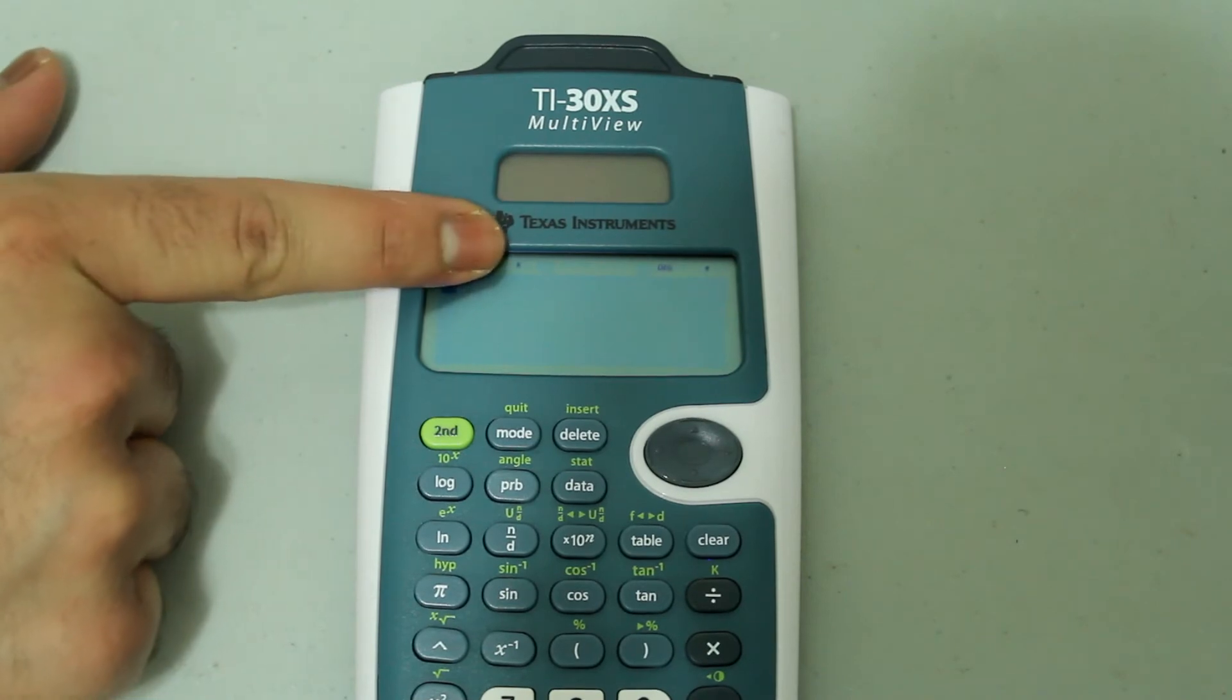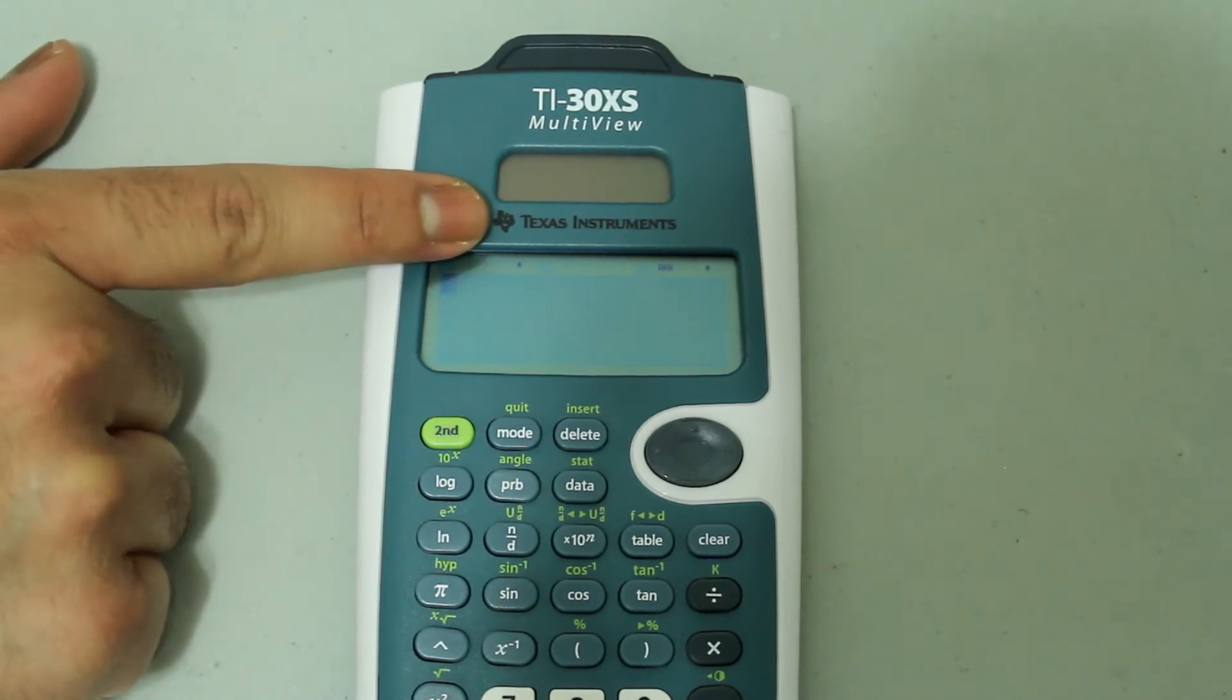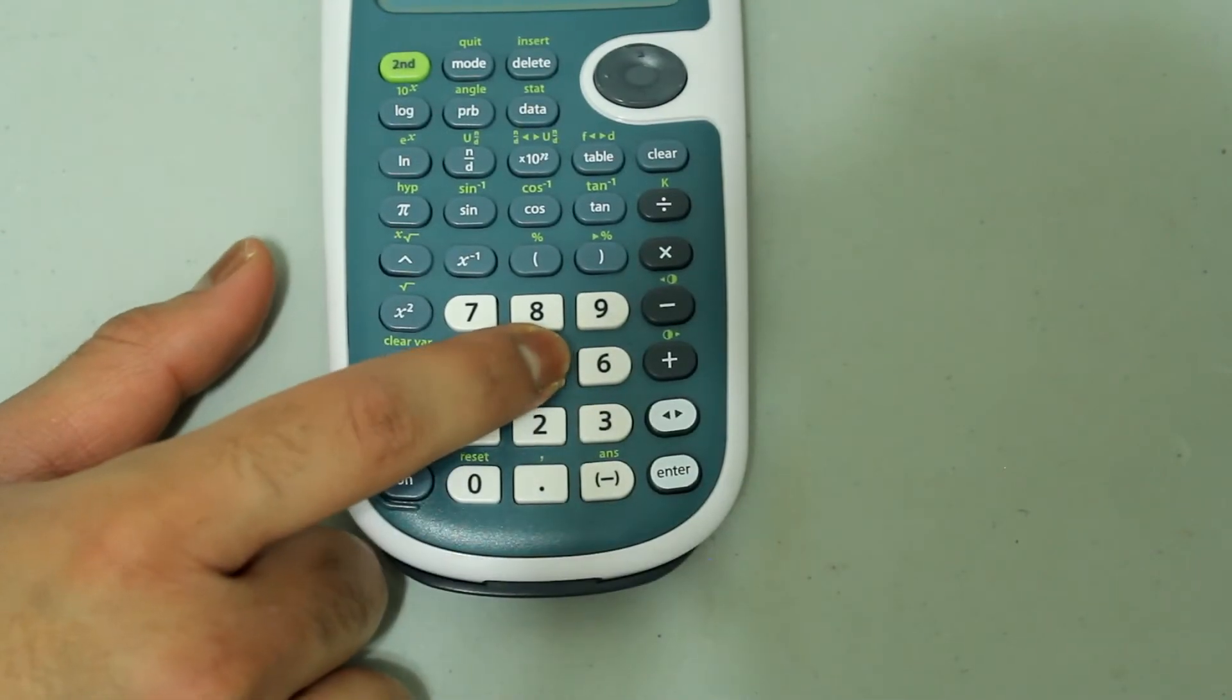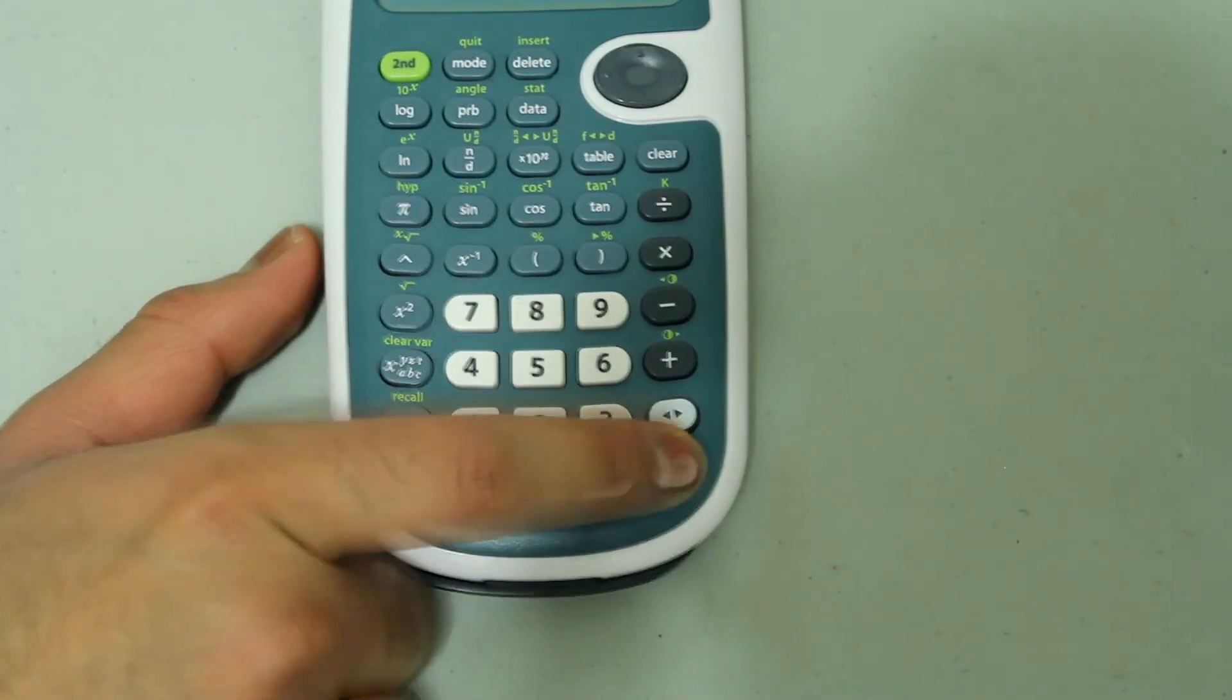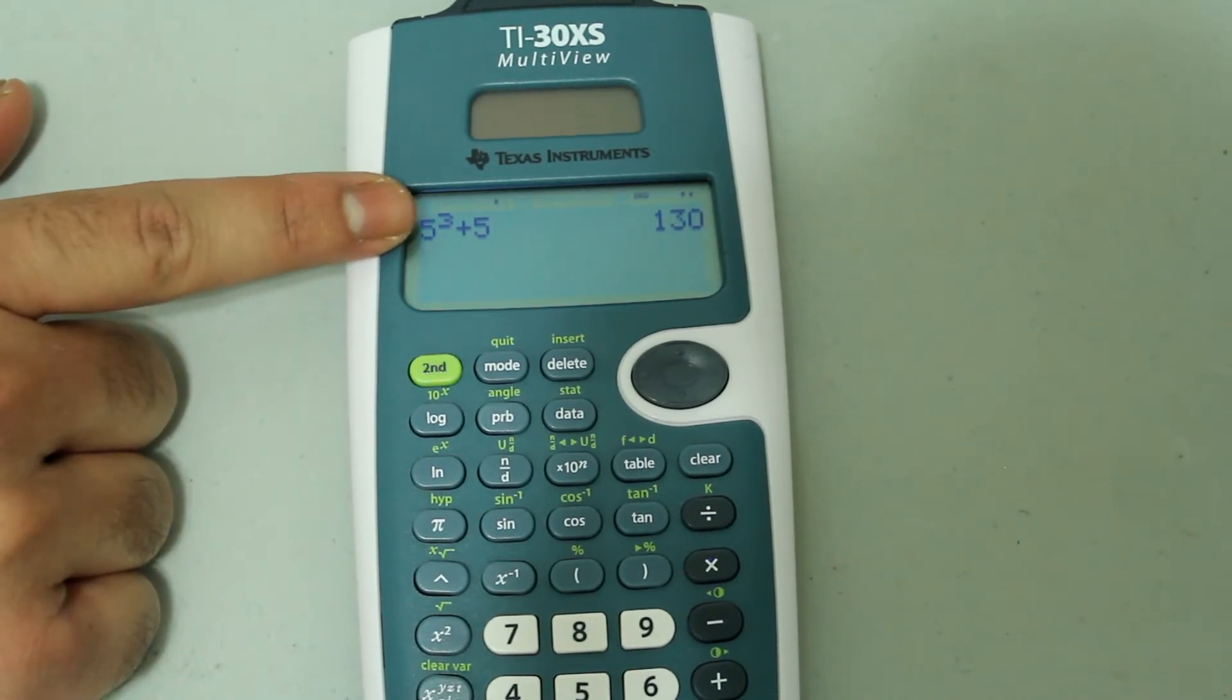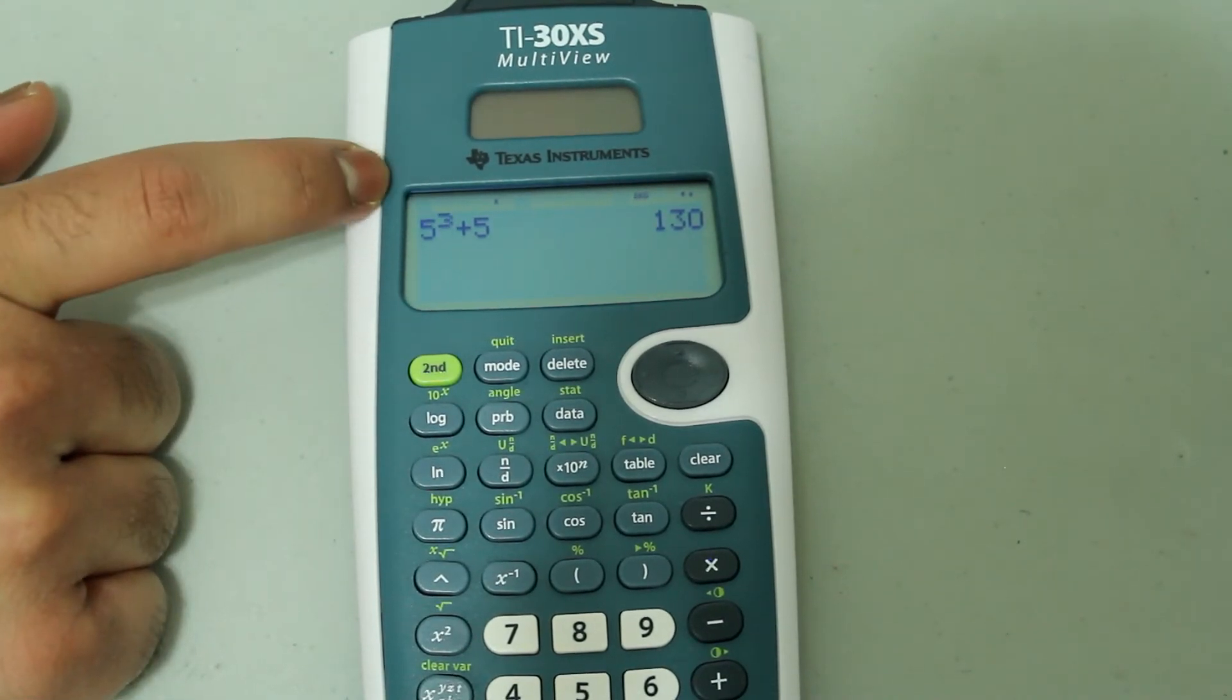Now you'll notice that a little K appears on the top of your screen. So now if I type in 5, for example, and press enter, then 5 is cubed and then 5 is added to that.